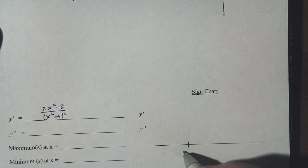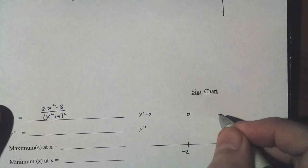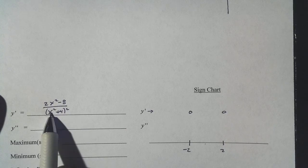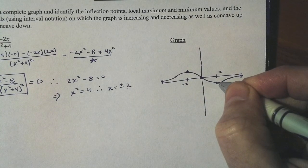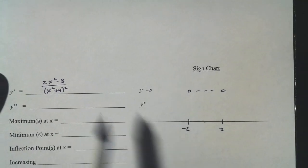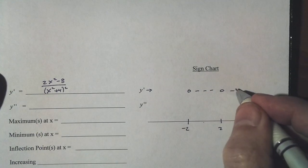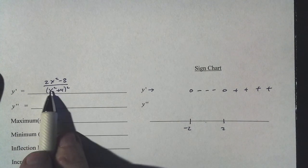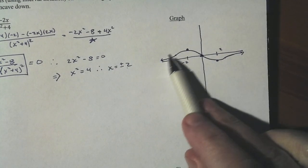Let's confirm: the first derivative is zero at negative 2 and 2. Let's put something in between — say x equals 0 — and I get negative over positive: negative. The graph is going down from negative 2 over to 2. Now let's put in x equals 3: I get 2 times 9 = 18 minus 8, positive; denominator is clearly positive. Positive divided by positive is positive. And if I put in negative 3 it's the same — our function appears odd and the first derivative even.